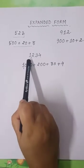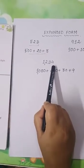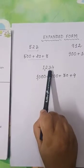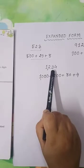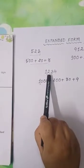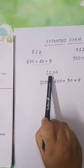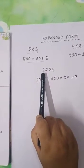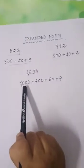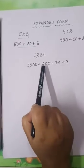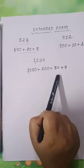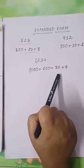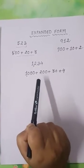Here I have written another number: 1234. The digit 4 is in the 1's place, so the place value of 4 is 4. The digit 3 is in the 10's place, so the place value of 3 is 30. The digit 2 is in the 100's place, so the place value of 2 is 200. And the digit 1 is in the 1000's place, so the place value of 1 is 1000. Using addition symbol between the value of these digits, I have written this number in expanded form. So students, expanded form means to write the place value of a number by using addition symbol between the value of each of its digits.